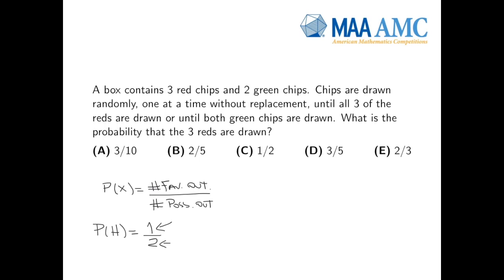And so the tricky thing here is that this is not as simple as flipping a coin. There are three red chips and two green chips, and there are two ways of finishing this game. You draw them randomly, one at a time, and then you either stop when you get all three of the reds or when you get both green chips.